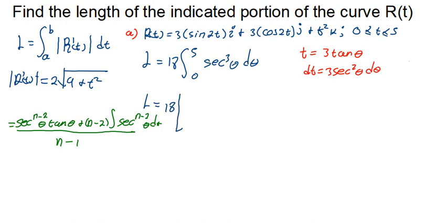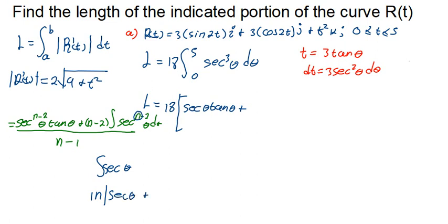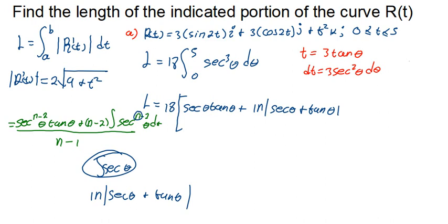Applying the reduction formula with n = 3: we get sec(θ)tan(θ) plus the integral of sec(θ) dθ, all divided by 2. The integral of sec(θ) is ln|sec(θ) + tan(θ)|. So the result is sec(θ)tan(θ) plus ln|sec(θ) + tan(θ)|, evaluated from 0 to 5, with the denominator 2.